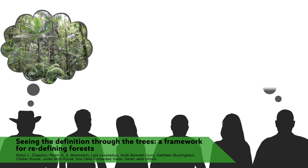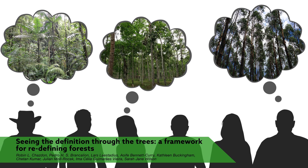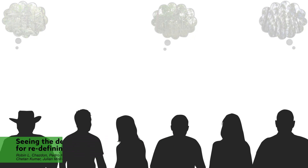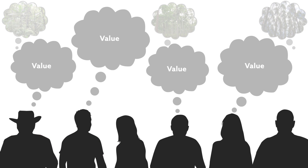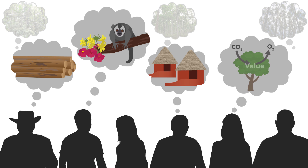What exactly is a forest? Most people have a mental picture of what a forest is, but beyond physical appearance are values associated with what this forest provides to people and nature. Depending on your perspective, a forest may be seen as a source of timber, an ecosystem containing important biological diversity, a home for indigenous people, or a sink for carbon.